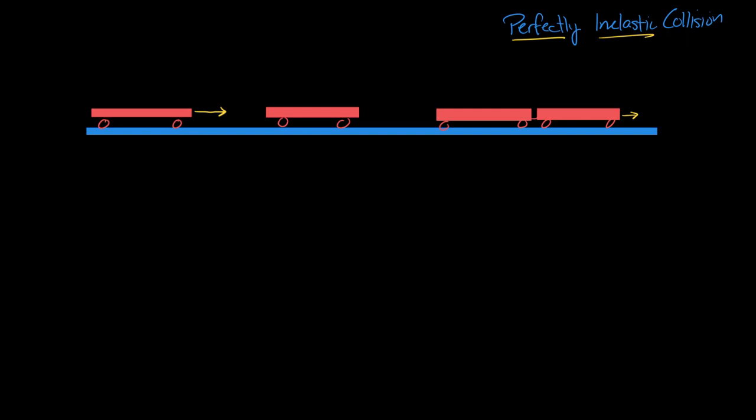So a perfectly inelastic collision is one in which the two objects stick together. That's it. A perfectly inelastic collision is one in which the two objects stick together. So it could be something silly like, there's problems like this where you look in a book, it's like a bug eats another bug. That'd be a perfectly inelastic collision.